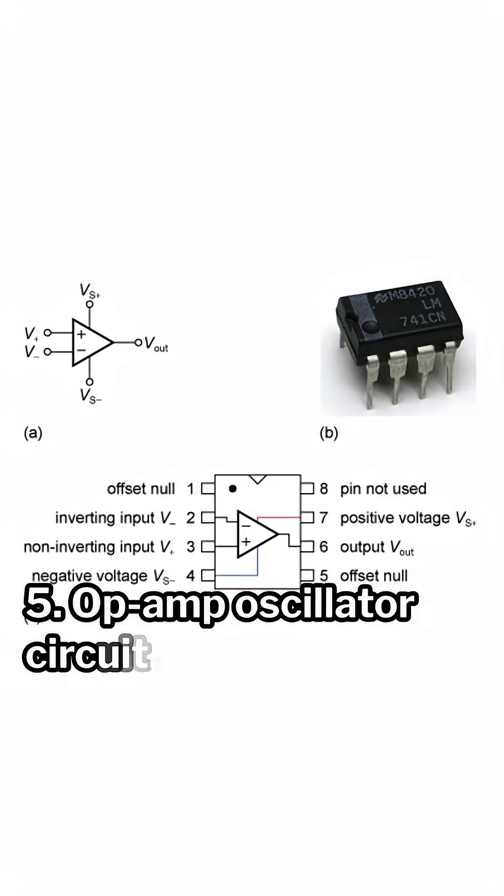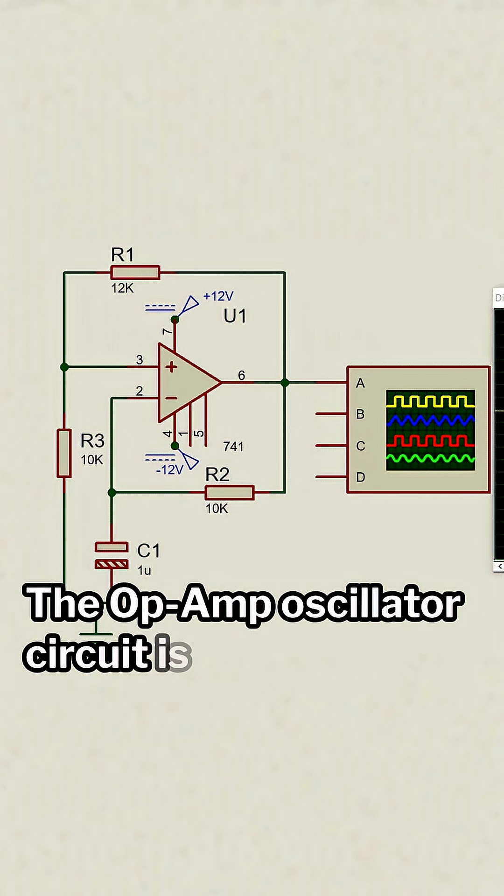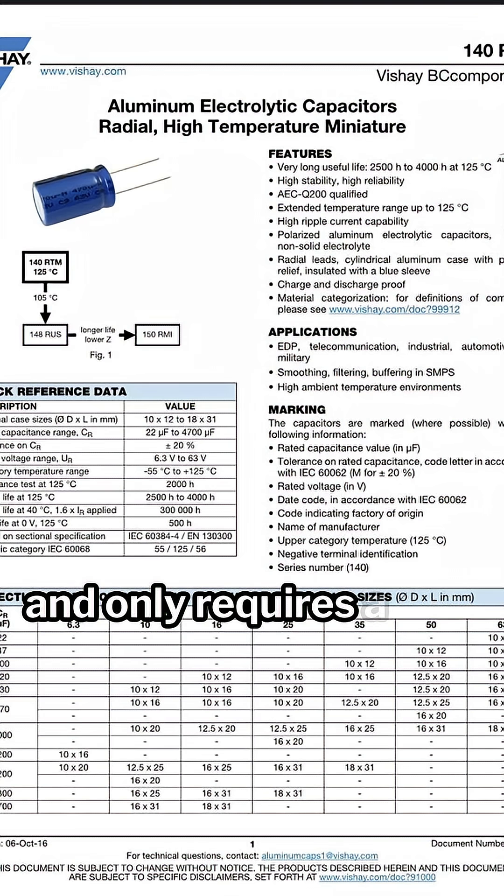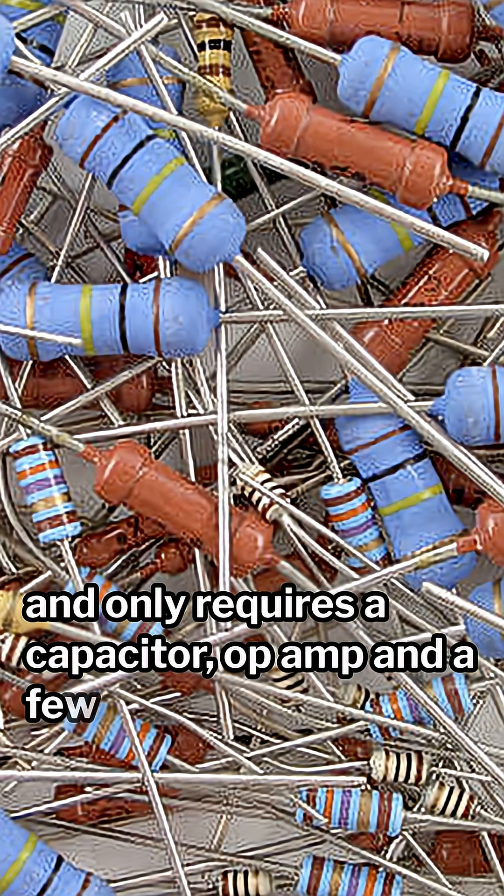5. Op-amp oscillator circuit. The op-amp oscillator circuit is a very simple circuit to make for beginners wanting to learn op-amp basics, and only requires a capacitor, op-amp, and a few resistors.